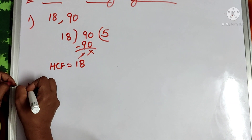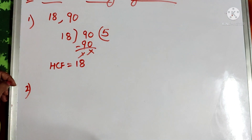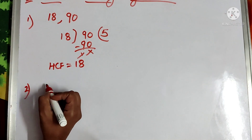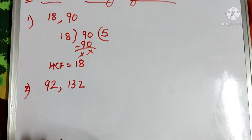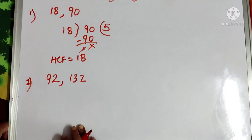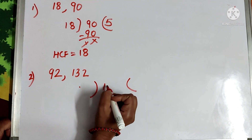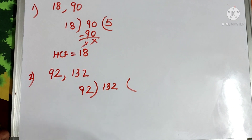Let us solve one more example. Suppose you have to find the HCF of 92 and 132. What we do is divide the greater number — that is 132 — by the smaller number, 92.